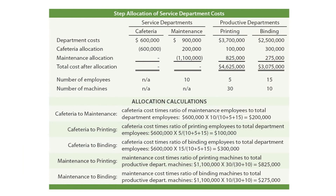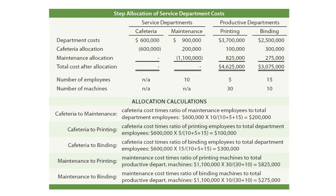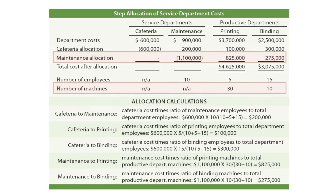We're going to keep our same costs here. The cafeteria, maintenance, printing, and binding start with the same costs. But now the cafeteria cost of $600,000 is allocated not only to printing and binding, but also to the maintenance department based on the number of employees in each department. So we're stepping out that cost to maintenance, printing, and binding. After making that Step allocation, the maintenance department has a total cost of $1,000,001, which is then allocated to printing and binding based on the number of machines in use in each particular department.